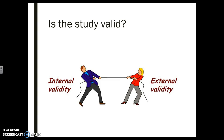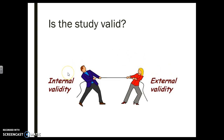When it comes to study validity, there are two choices: internal and external validity, and you don't get both. You get one or the other usually. If you have high internal validity, you don't have much generalizability, and vice versa — if we have high external validity, we can generalize, but we're not controlling for every single aspect to try to establish cause and effect.